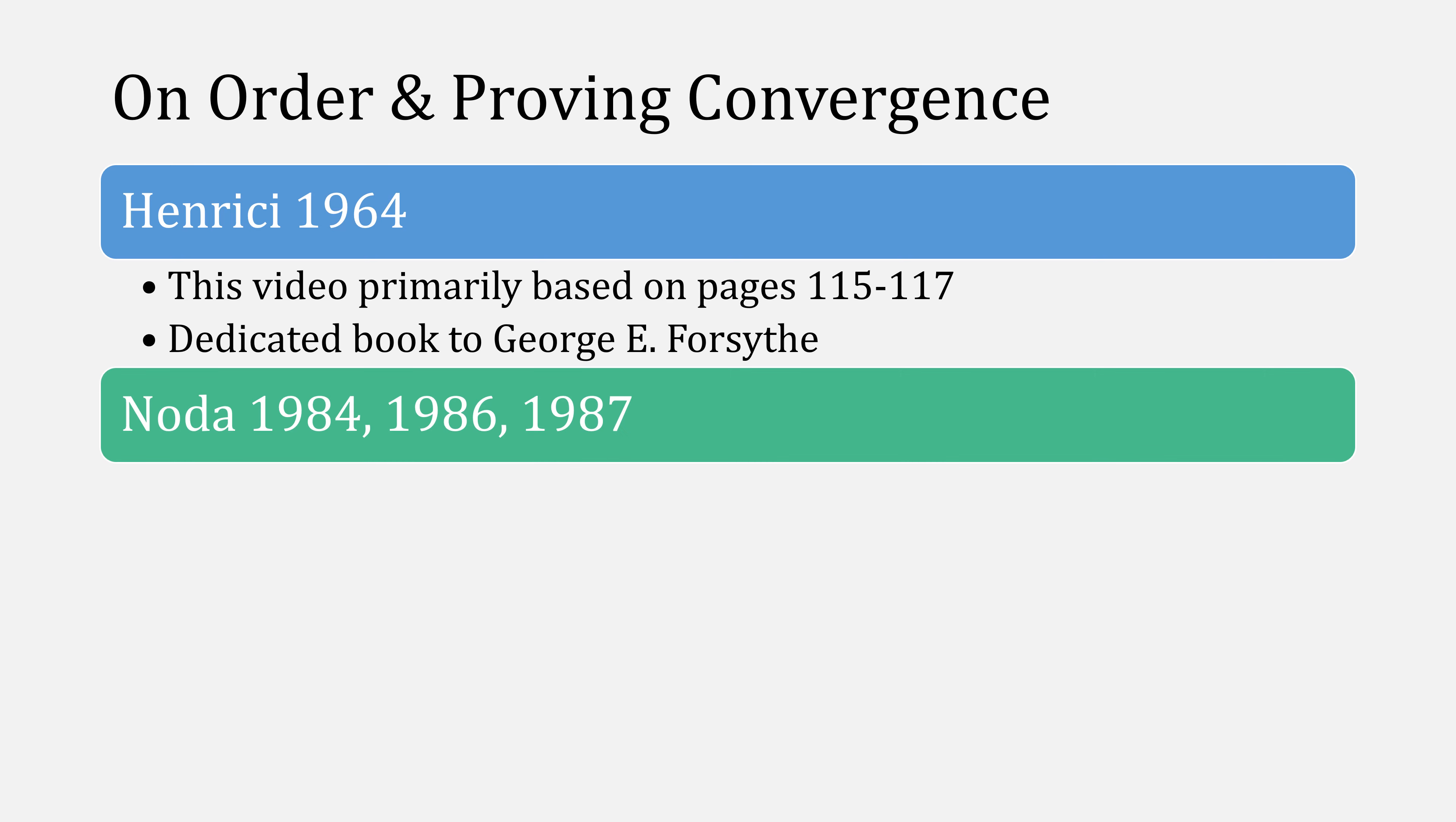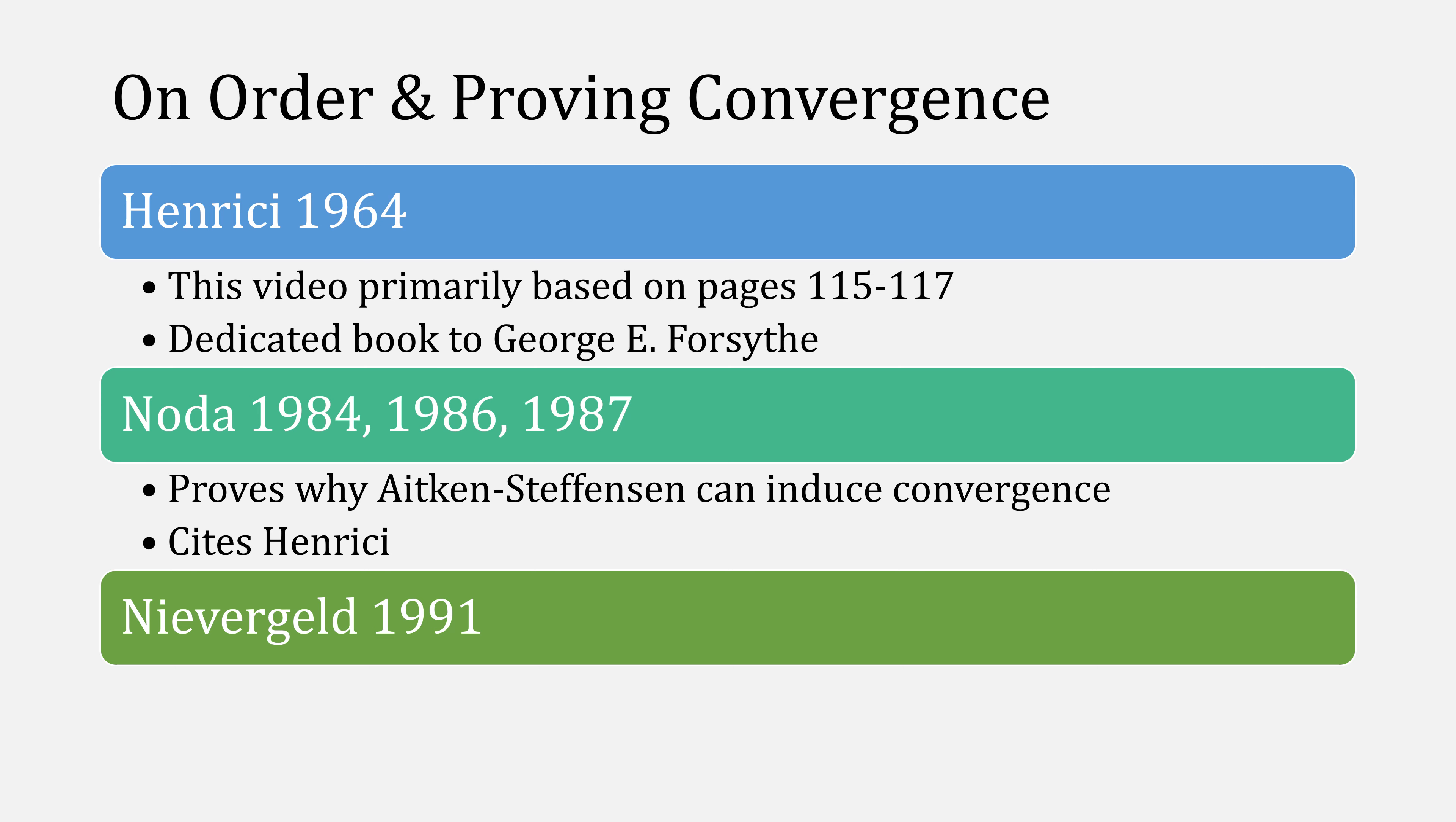One of the people who picked it up was Noda, who published a series of papers proving why Aitken-Stephenson can't induce convergence, specifically citing Henrissey. In other words, Neil Vergerald, who in 1991 was able to prove the quadratic convergence behavior of Aitken-Stephenson. I'll have links to all these papers in the description box below the video.